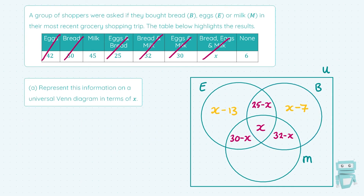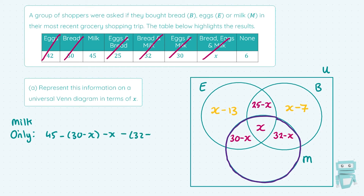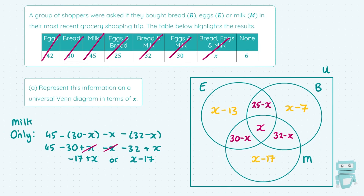For milk only, the milk circle totals 45. I start with 45, take off (30 minus X), take off X, and take away (32 minus X). That gives a value of minus 17 plus X, or X minus 17. So X minus 17 goes in the milk only region. Lastly, 6 people bought none, so 6 goes in the outside of the circles. That completes our Venn diagram — it's busy!